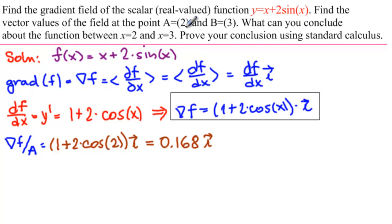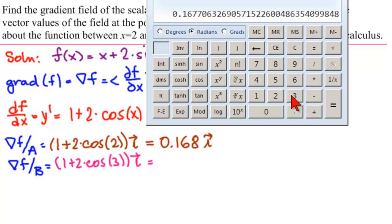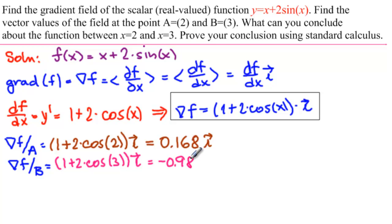So that's our vector at a. Our vector at the point x equal to 2 is this. And then we have del f at b is equal to 1 plus 2 times cosine of 3i equals. Get our calculator, and we're still in radians. 3 cosine times 2 plus 1 equals minus 0.9, and this will be 8, 0. So minus 0.980, minus 0.980 i.